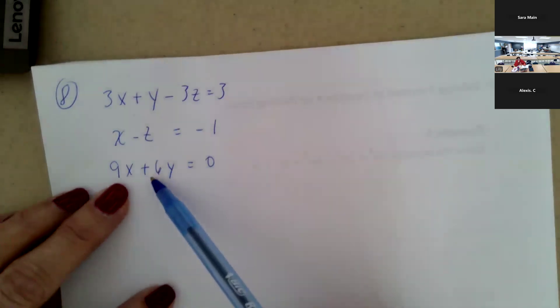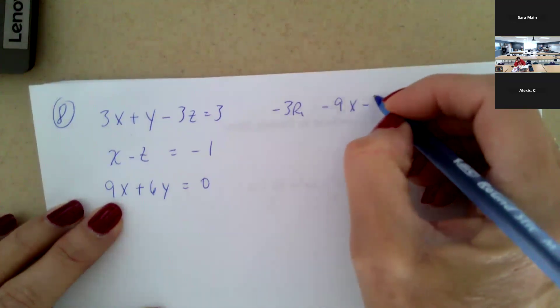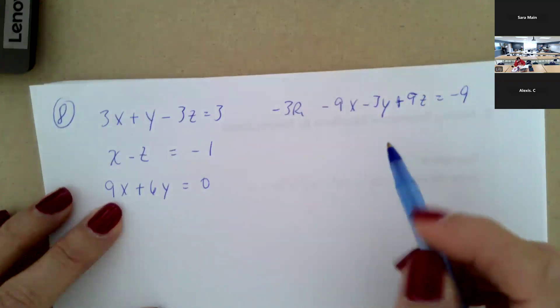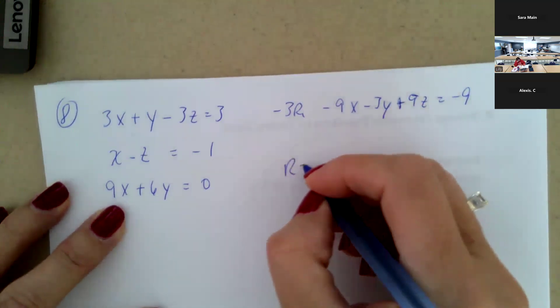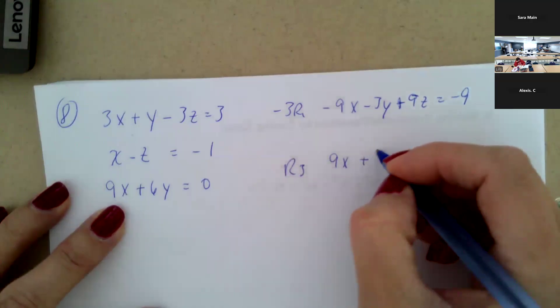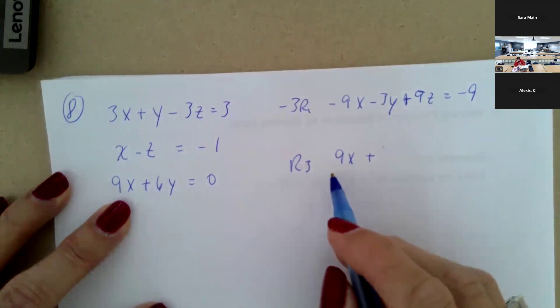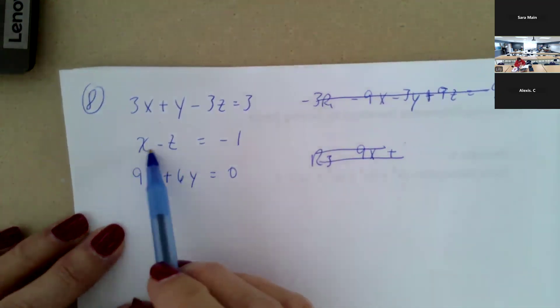What we could do is notice that in row one and row three, the x and y terms are just a multiple of three of each other. So if we multiply row one by negative three, we get negative nine x minus three y plus nine z equals negative nine, and add that with row three. But they don't totally eliminate, so that doesn't benefit us — scrap that. Sometimes you start something and realize it's not helping. Row two has eliminated y; row three has eliminated z.